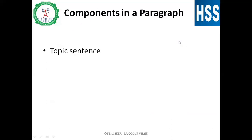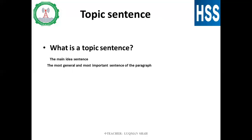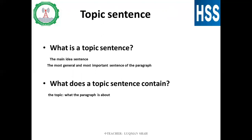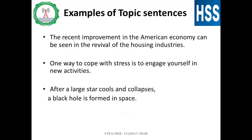The components of a paragraph: there should be a topic sentence, then supporting sentences, and then concluding sentences. The topic sentence is the main idea sentence — the most general and most important sentence of the paragraph. It contains what the paragraph is about, the controlling idea, and the writer's attitude or idea about the topic. A topic sentence is important because it gives the reader a glimpse of everything you want to cover about the topic.